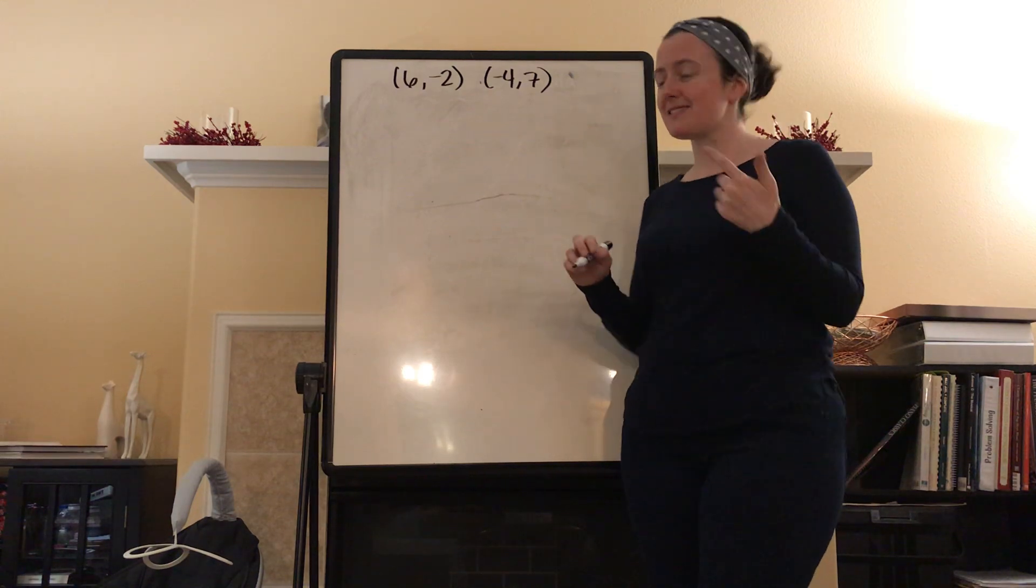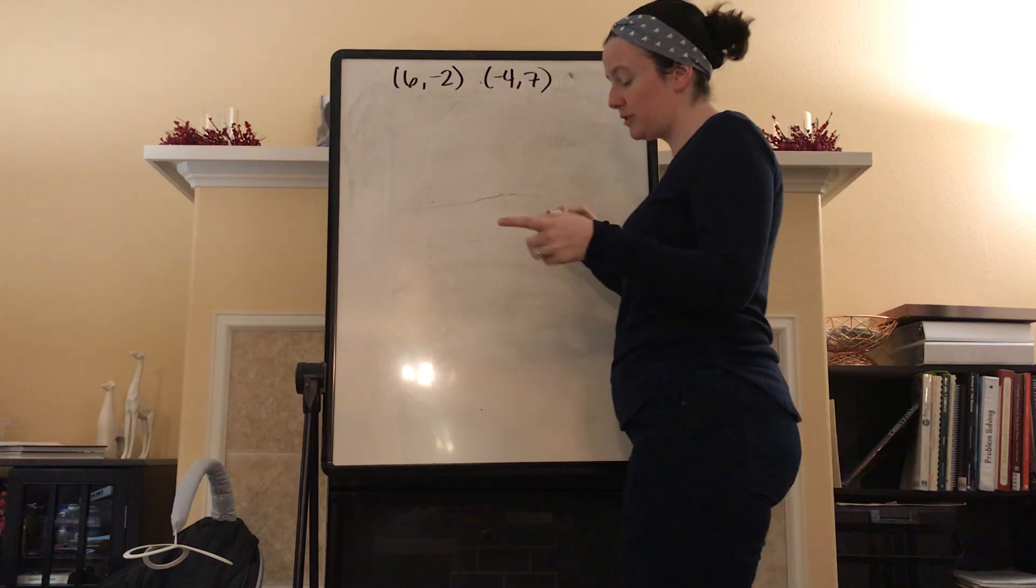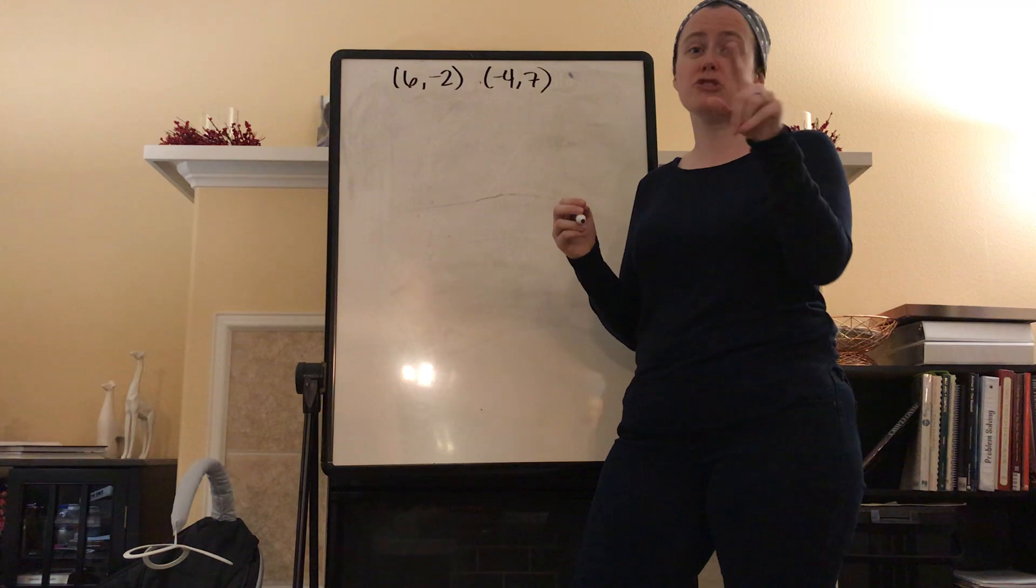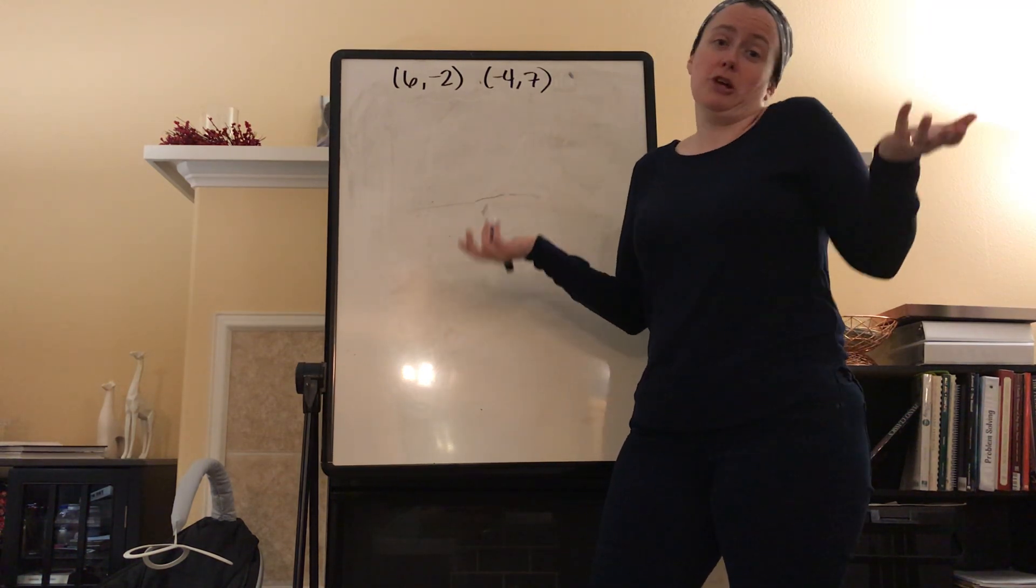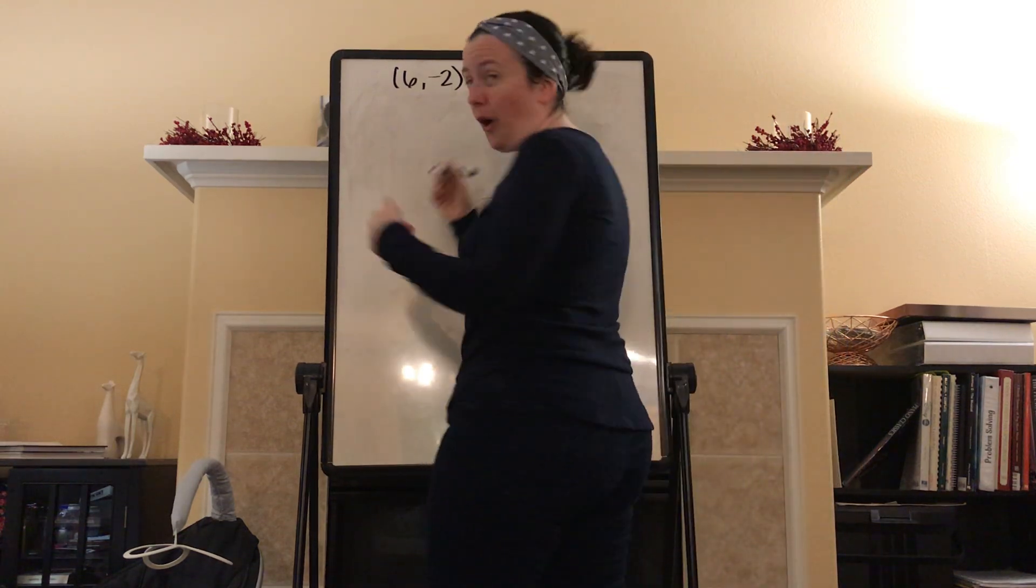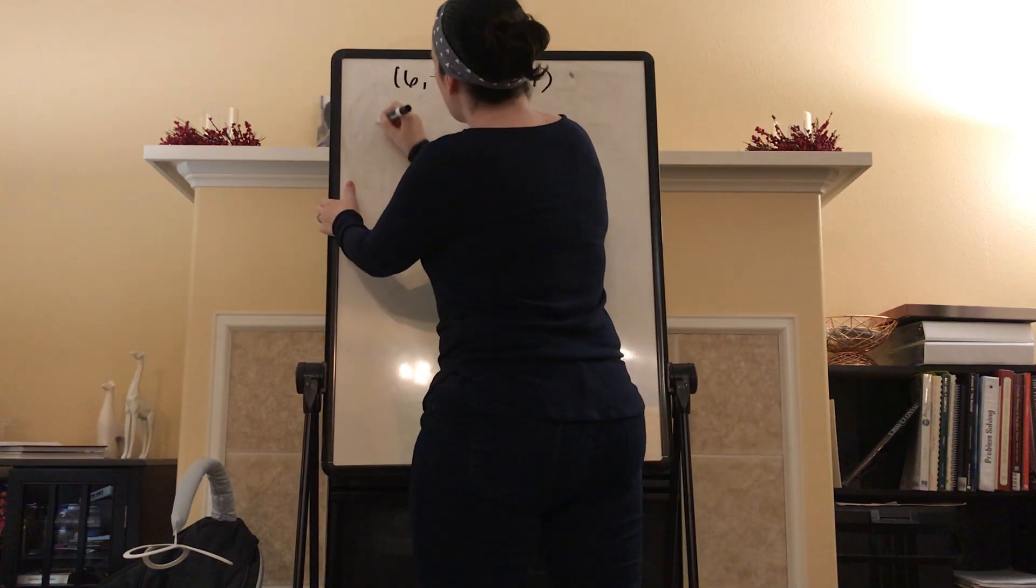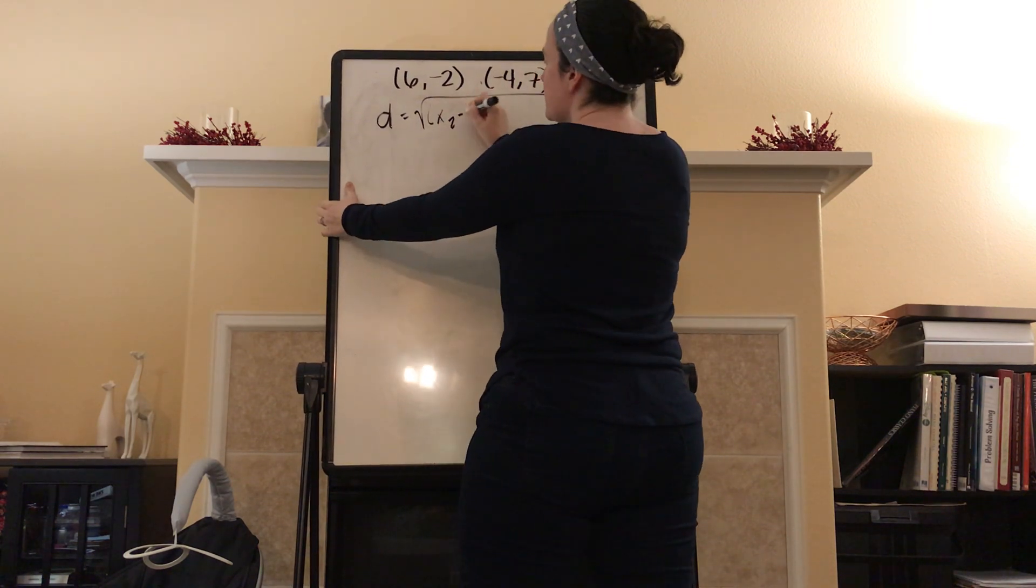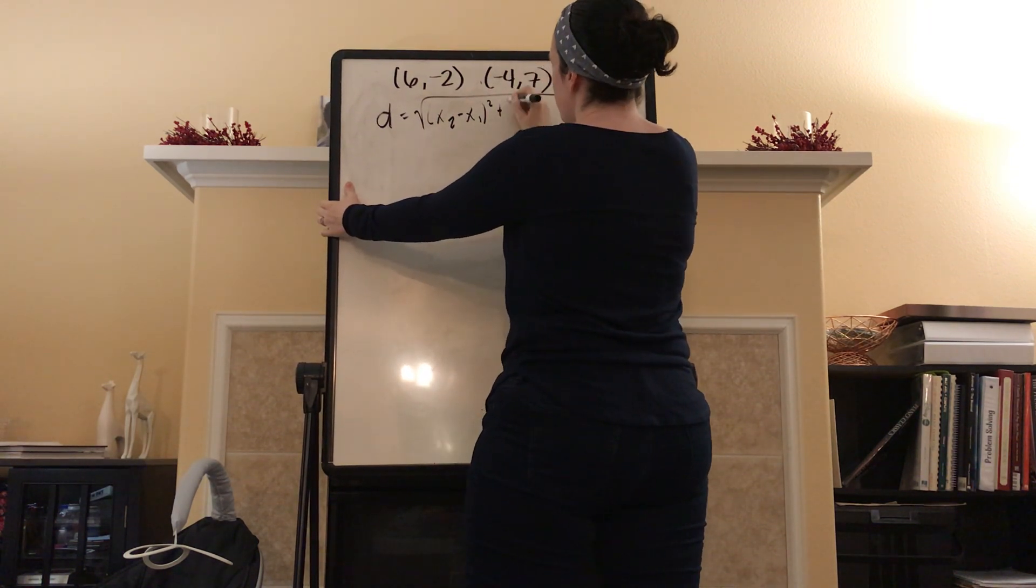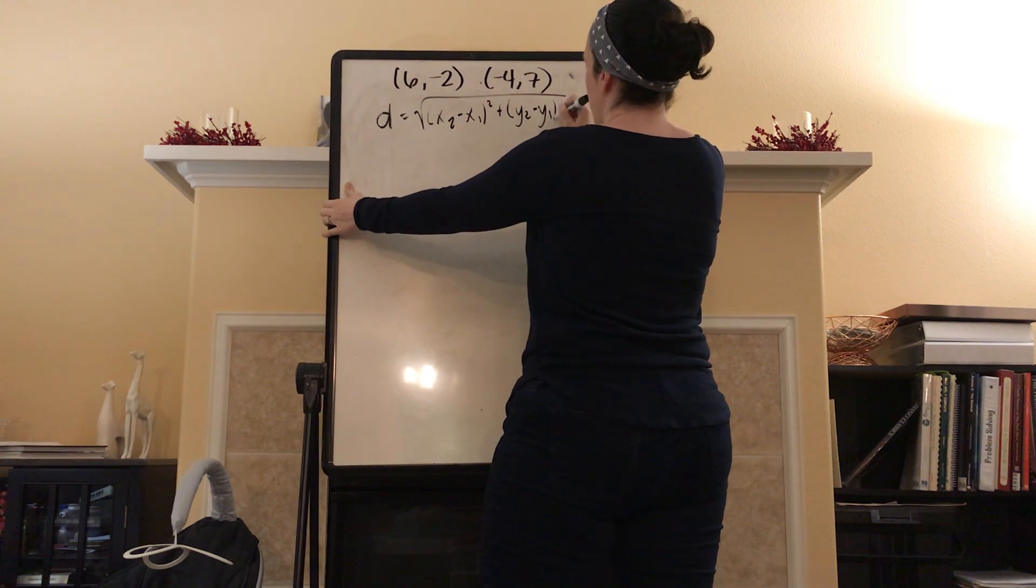First thing you need to start off with is the distance formula. What is the distance formula? Well, if you didn't catch my last video, you should go back and watch it because it's super entertaining. Probably not, but maybe. Who knows? Only you. The distance formula is equal to the square root of x2 minus x1 squared plus y2 minus y1 squared.